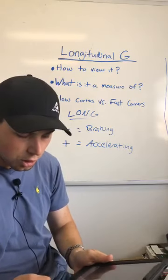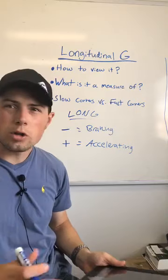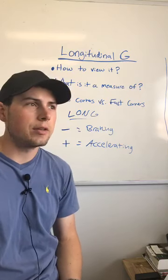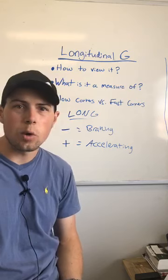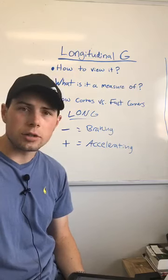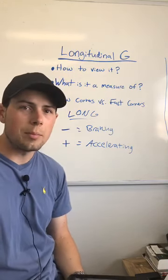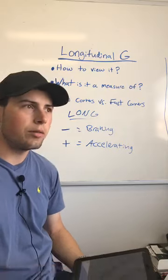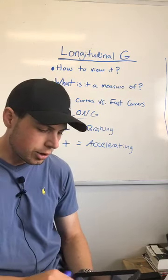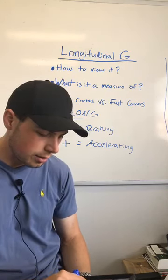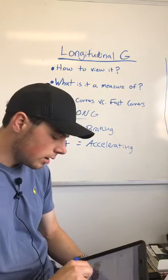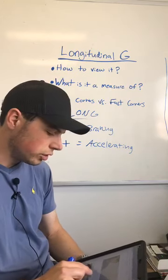So one G under braking or thereabouts is kind of our ceiling for street-based tires. If you have 200 tread wear tires on your car, about one G — some 200 tread wears will do more than that. Special tires like factory tires on something like a Viper ACR, Corvette ZR1, Porsche 911 GT3 RS — those types of tires are going to be softer. Michelin Pilot Cup, sport-type tires or the Pirelli equivalent might be able to see over one longitudinal G.